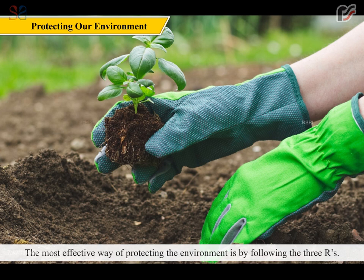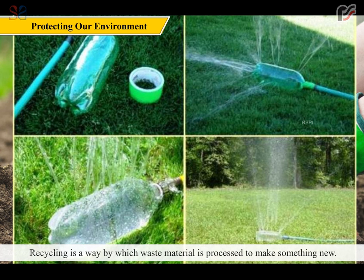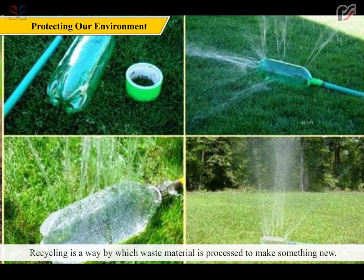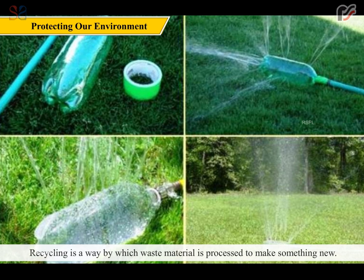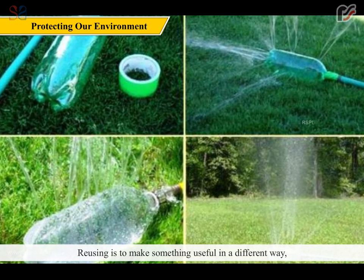Protecting our environment. The most effective way of protecting the environment is by following the three R's: reduce, recycle and reuse. Reducing is to acquire or buy only what we can use to the fullest. Recycling is a way by which waste material is processed to make something new. Reusing is to make something useful in a different way, such as using newspaper as wrappers.